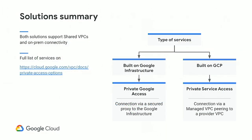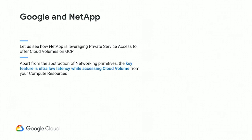To summarize: Mahesh discussed all the services running on the Google infrastructure. I discussed the services running on the Google Cloud infrastructure — on GCP. There are two solutions, one for each. Services on the Google infrastructure like GCS and Spanner use Private Google Access. Services built on GCP like Cloud SQL, Redis, Memcached, TPU, or GKE Private Master use Private Service Access. Private Service Access uses VPC peering. Private Google Access uses a proxy to separate the GCP infrastructure and the Google infrastructure. We are now going to see how NetApp has built their services using Private Service Access and how they use VPC peering to give a very low latency filer application.